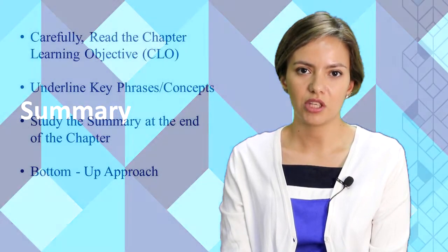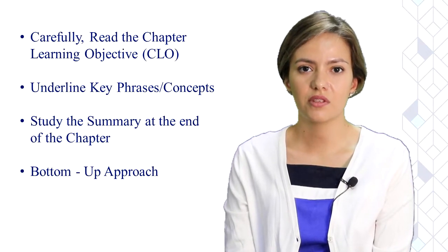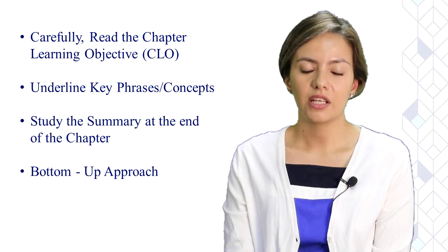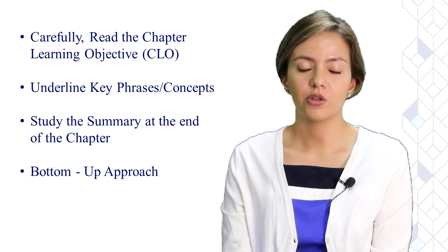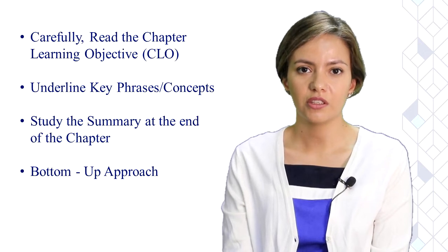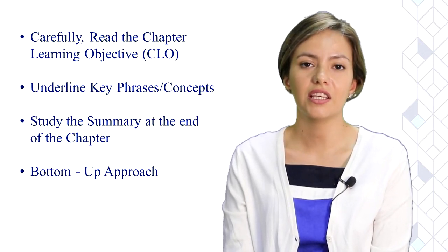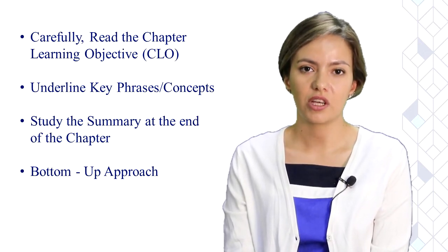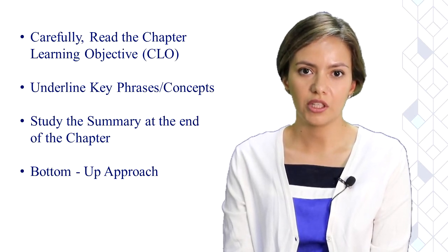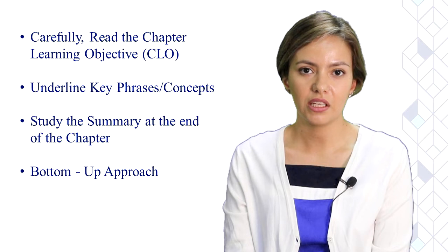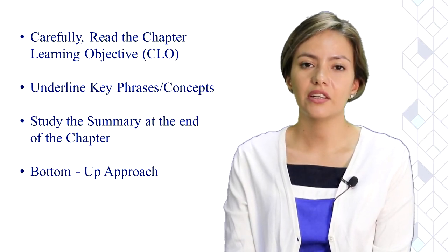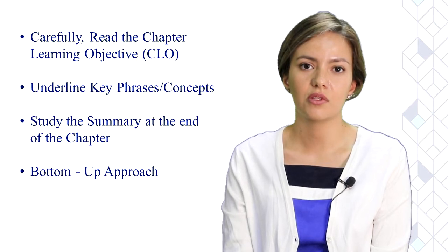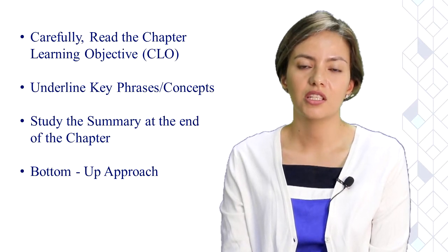Part four entails the summary. First, look at the chapter learning objectives and underline the key concepts and frameworks within that chapter. Thereafter, follow a bottom-up approach where you go to the summary and read the descriptions underneath each of the chapter learning objectives. After reading and becoming familiar with that short summary, you may go back to the beginning of the chapter and comb through the entire chapter, having a clear idea of the key concepts and frameworks to be addressed.